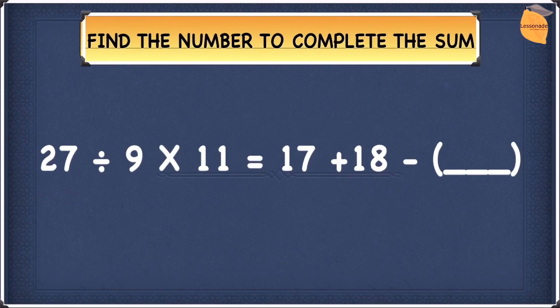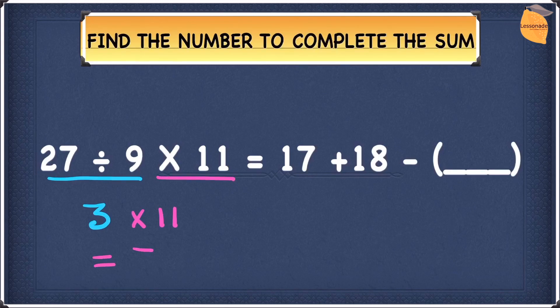Let's start by doing 27 divided by 9. 27 divided by 9 gives you 3. Now let's multiply this 3 by 11. 3 times 11 gives you 33. So the answer we got on the left hand side is 33.